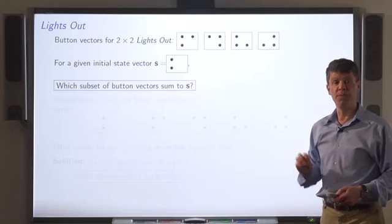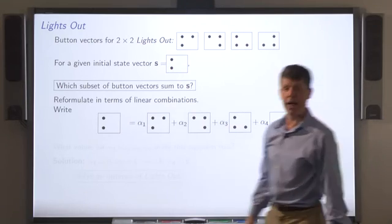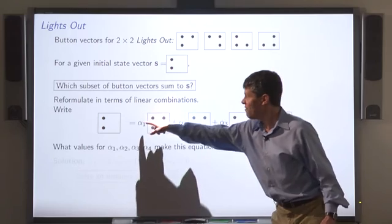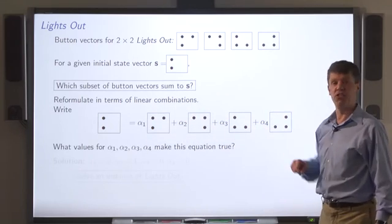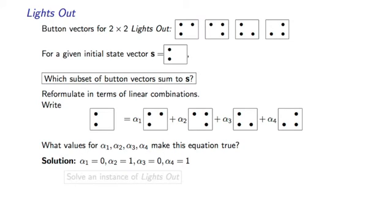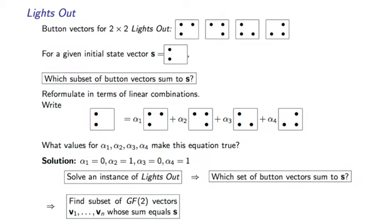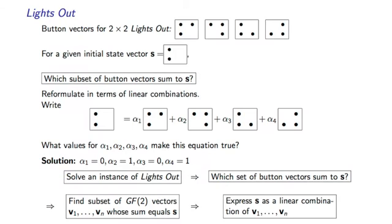We can express that problem in terms of linear combinations. We write the desired state vector as a linear combination of the button vectors and ask: what values of alpha do I need to make this true? We know that solving an instance of Lights Out can be transformed into the question of which set of button vectors add up to the target state s. More generally, given vectors v1 through vn, which subset sums to a vector s? This question can be reformulated as how to express s as a linear combination of v1 through vn.